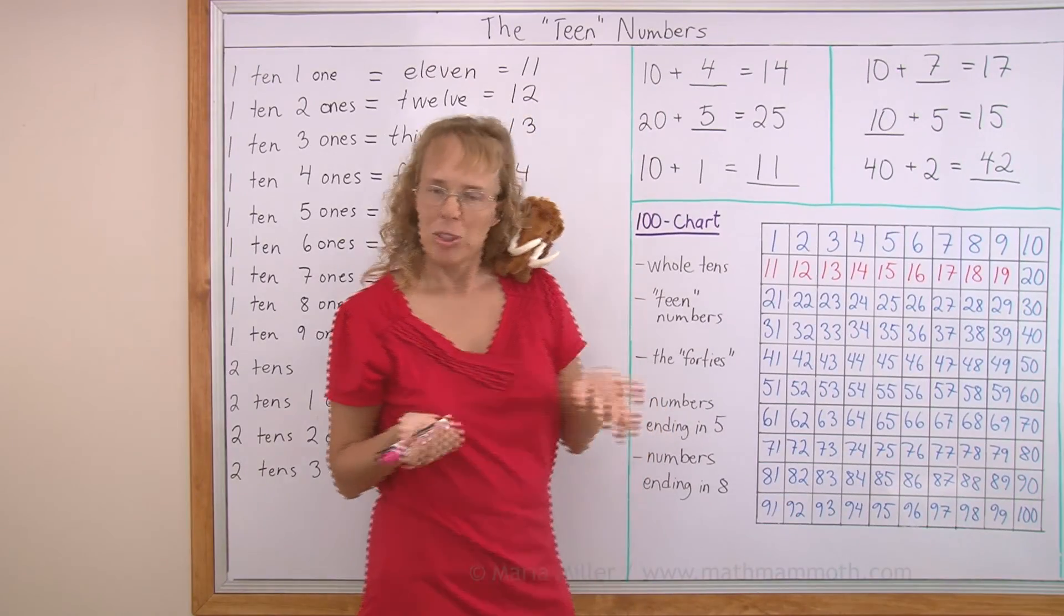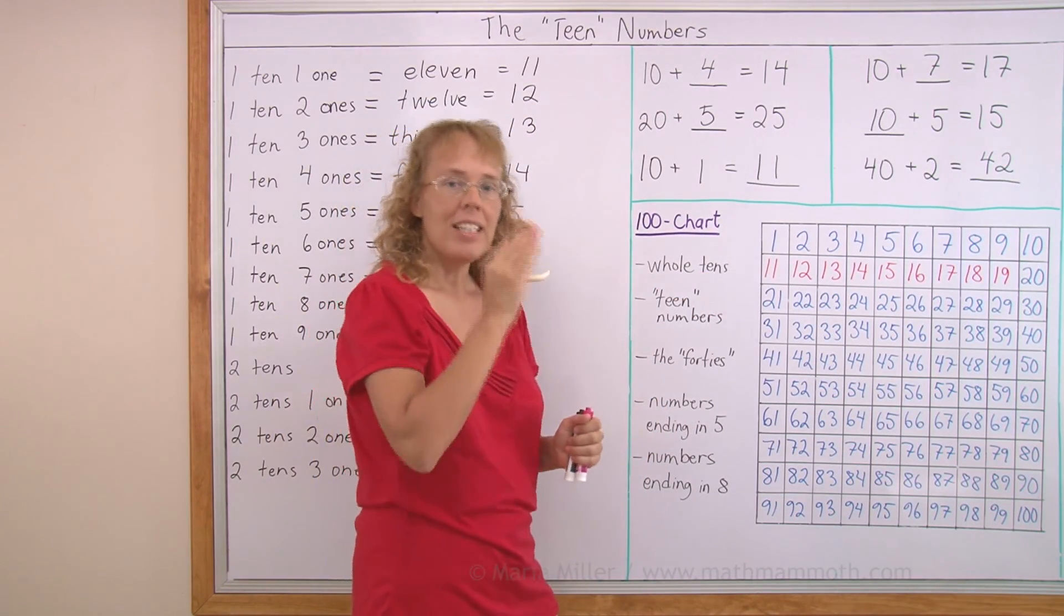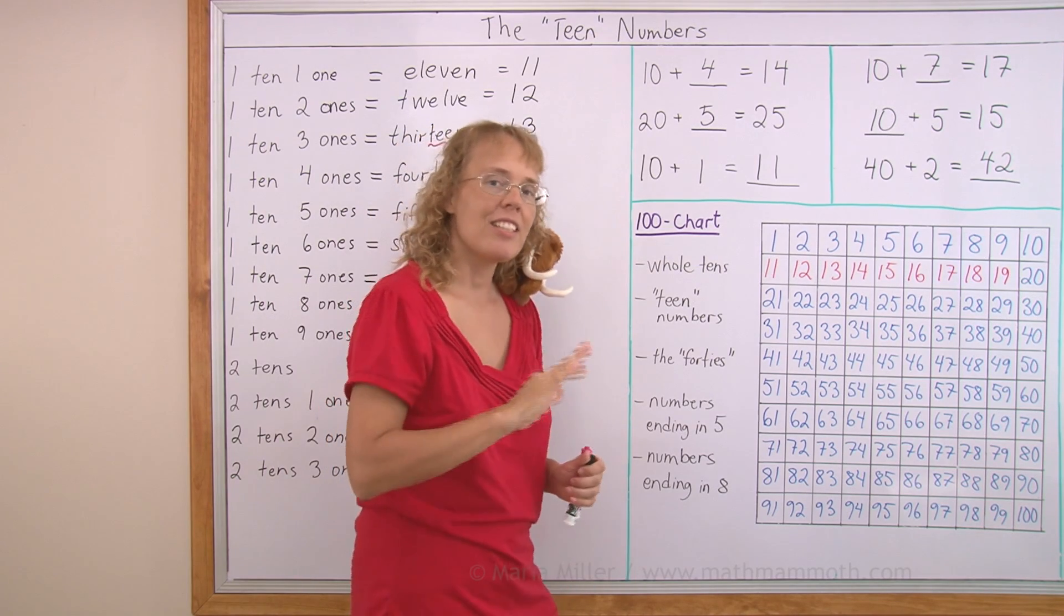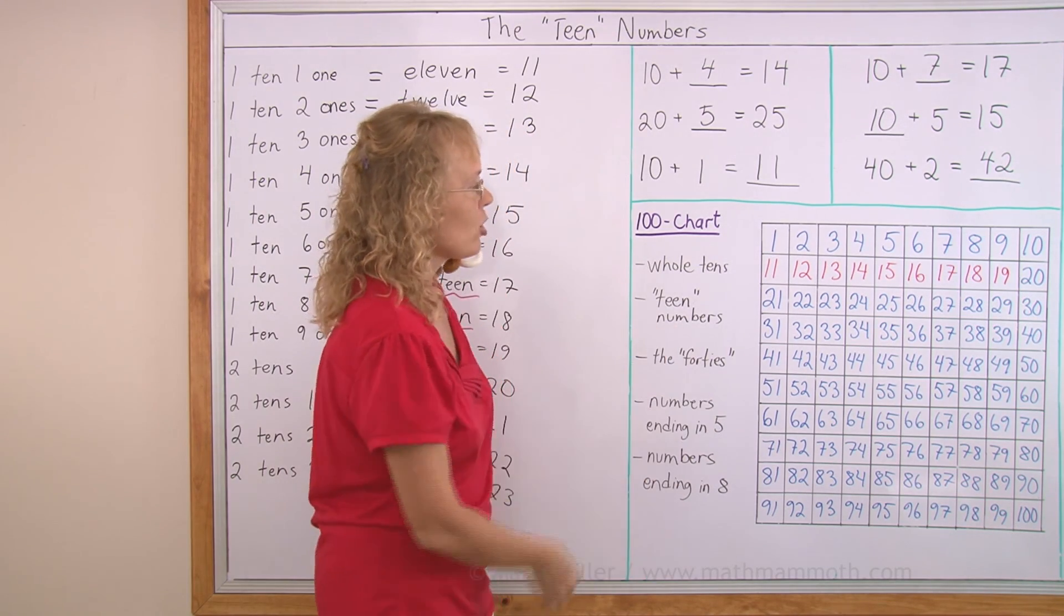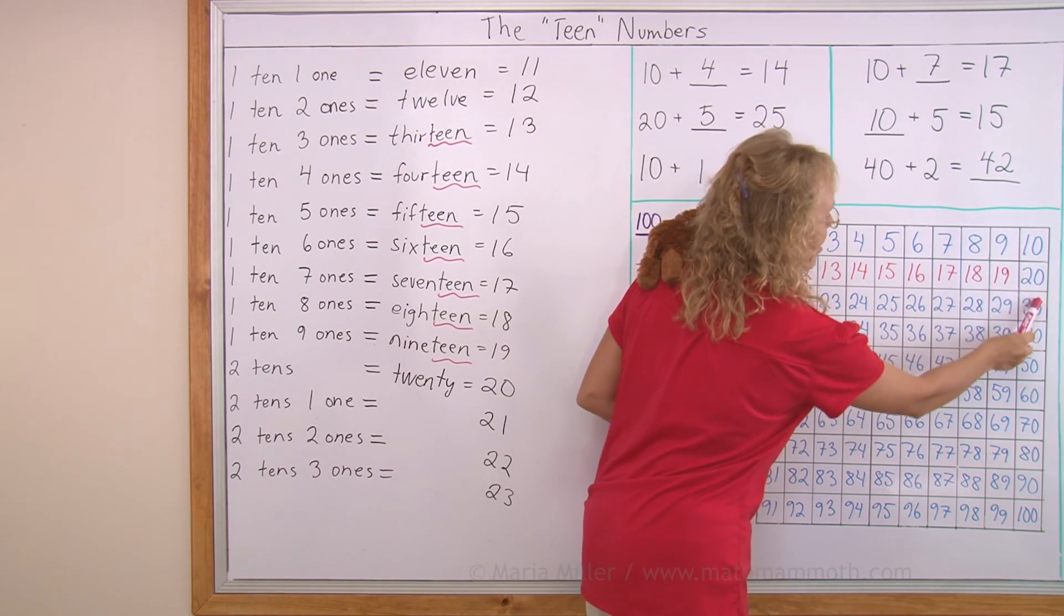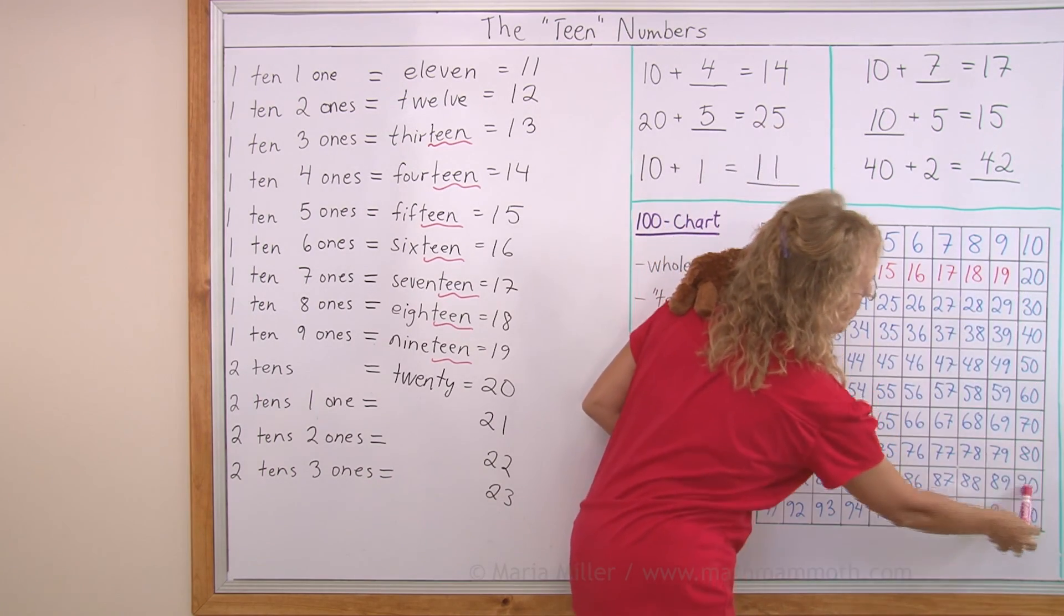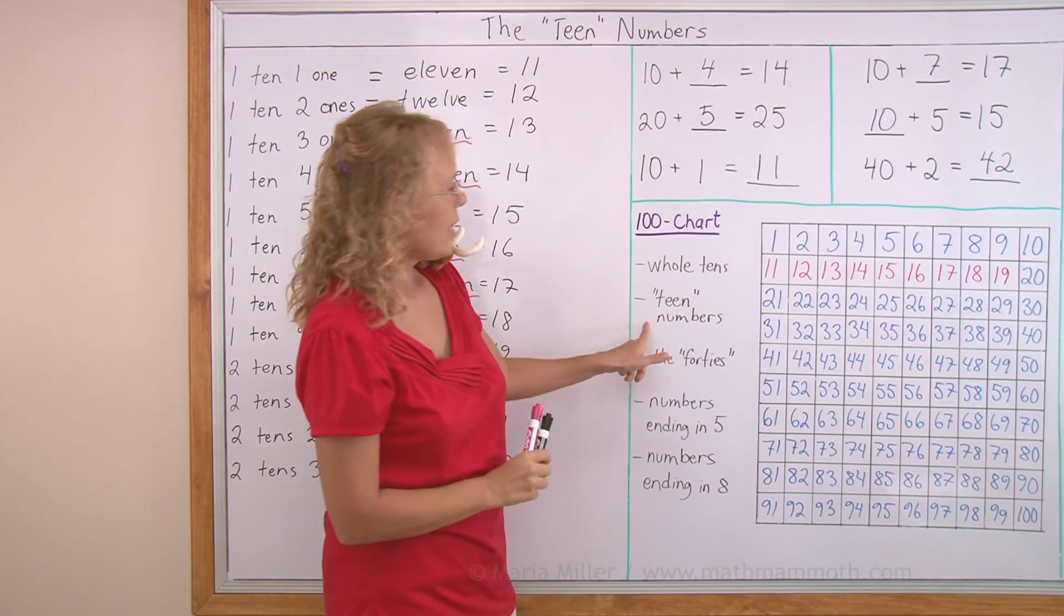Now we're going to find some special numbers here. First of all, the whole tens. Remember whole tens? 10, 20, 30, 40, 50, 60, 70, 80, 90, and 100. Where are they on the chart? They are in a special place, over here: 10, 20, 30, 40, 50, 60, 70, 80, 90, 100. They are in a column of their own, 10 numbers.